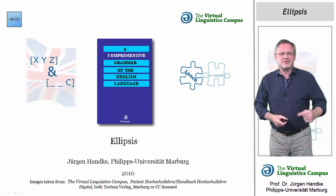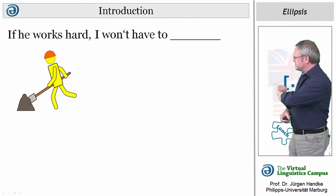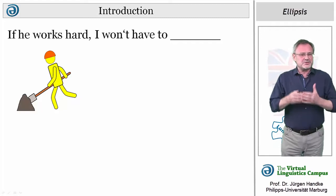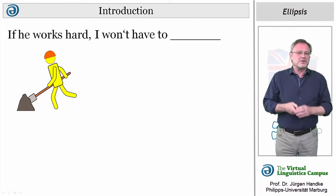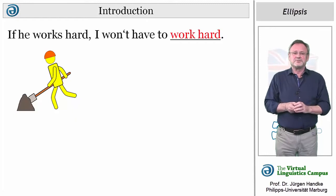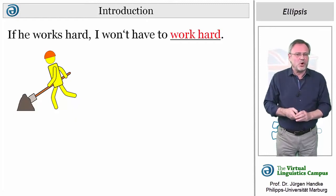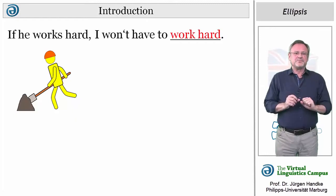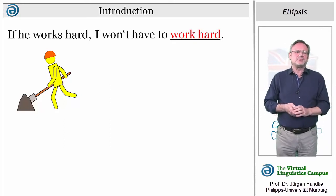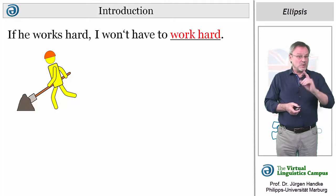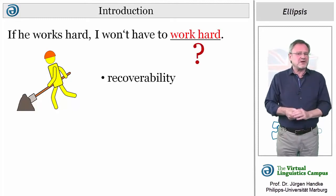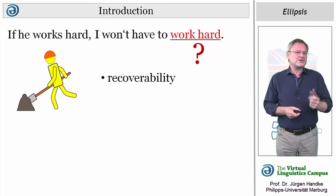Here is an example. In 'If he works hard, I won't have to,' the infinitive marker 'to' occurs without the normally obligatory predication 'work hard.' This has been omitted or ellipsis'd. There are various parameters which help us to categorize ellipsis. One such parameter is referred to as verbatim recoverability, or in short, recoverability.